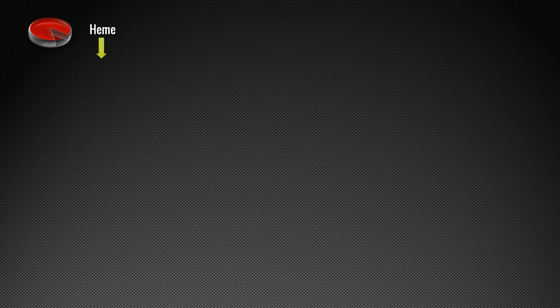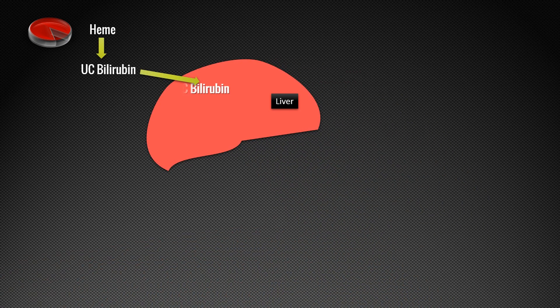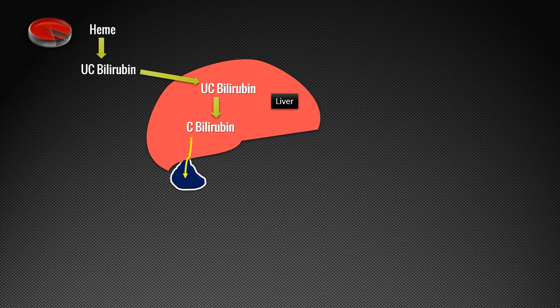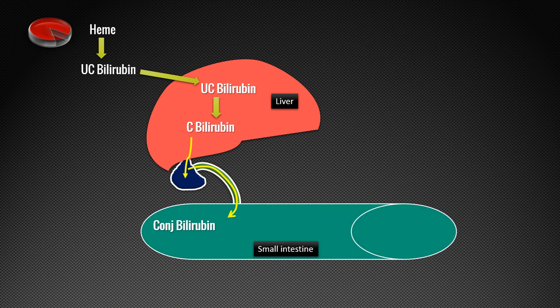This heme is converted to unconjugated bilirubin in the reticuloendothelial system, and it is transported to the liver through the circulation with the help of albumin. This unconjugated bilirubin is then conjugated in the liver to conjugated bilirubin, which along with bile salts — we call it bile — is stored in the gallbladder, and from the gallbladder it is released to the small intestine, specifically the duodenum, through the common bile duct.